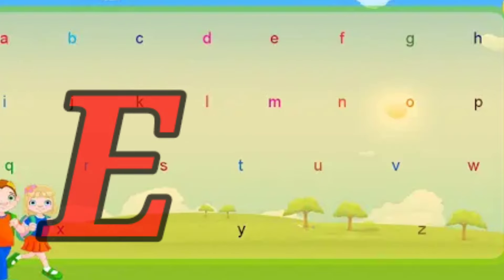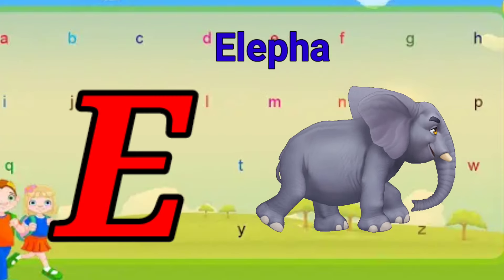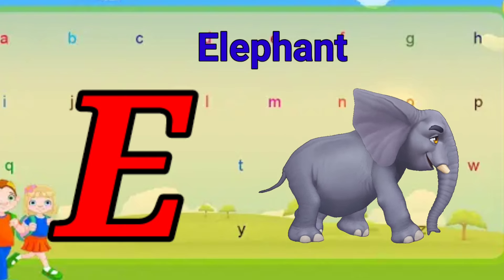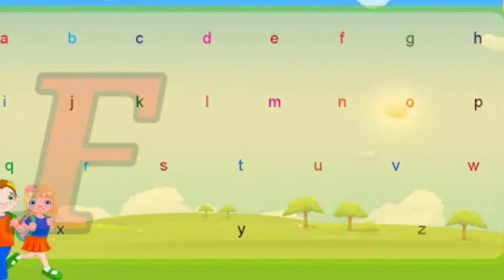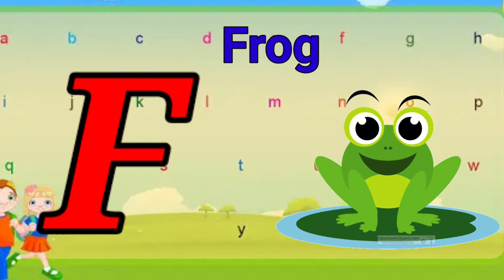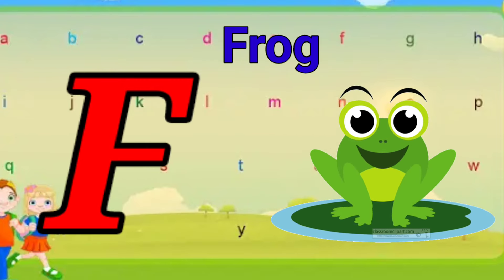E is for elephant, e-e-elephant. F is for frog, f-f-frog.